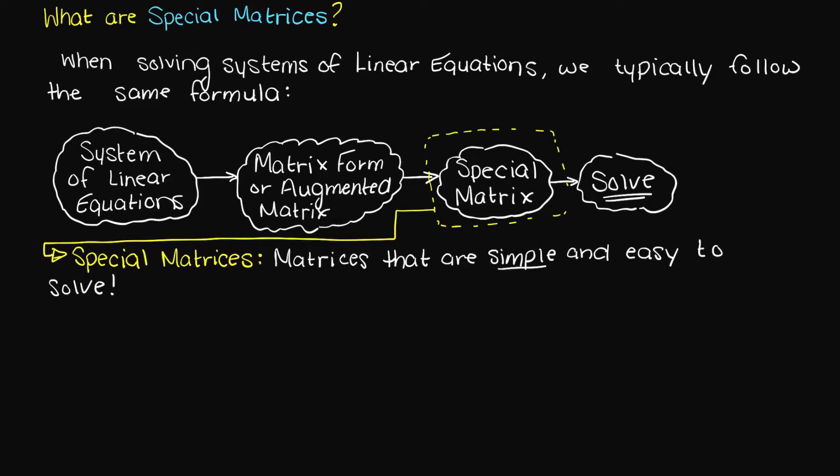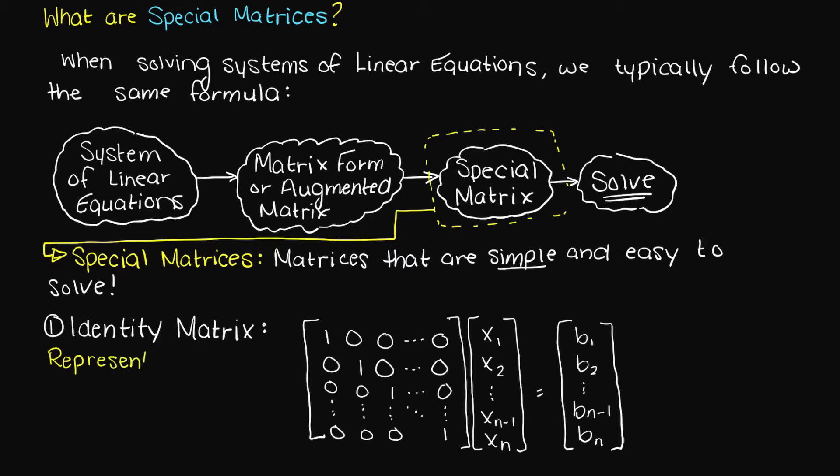There are four special matrices of interest to us. The first is an identity matrix, which you may be already familiar with. This is the simplest matrix there is, and it represents a completely solved system of linear equations. In this case, every x variable value is simply corresponding to the constant of b in the matrix.